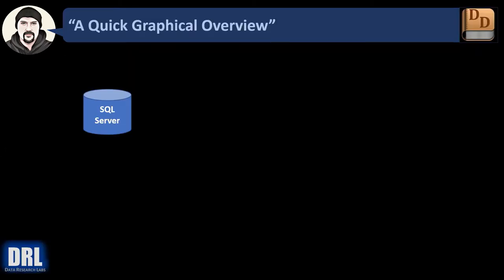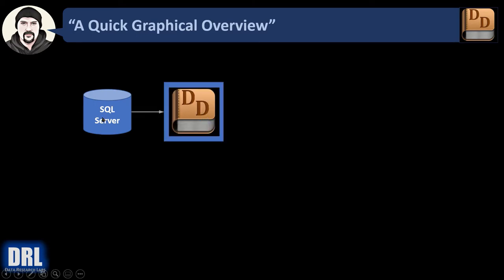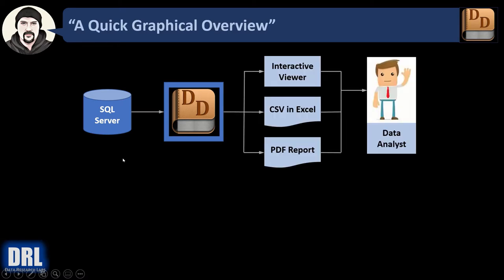First up, a quick graphical overview of the tool. You start out with SQL Server, then you run the data dictionary, point it at SQL Server, choose a schema, make some selections, and then you ultimately have output generated — the data dictionary — either to an interactive viewer, basically a data grid on screen that you can sort, filter, and scroll through, or an extract to CSV that you can view in Excel or Notepad, or finally a PDF report that looks really nice.